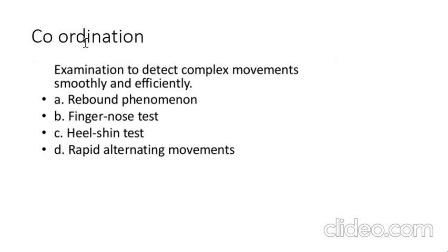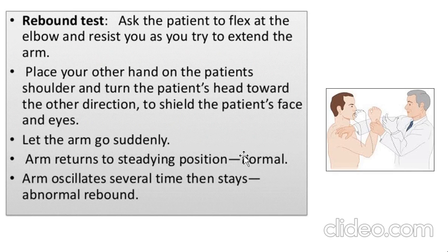Coming to coordination — we assess higher functions like the cerebellum, basal ganglia, and brainstem. To detect whether complex movements are done smoothly or not, we perform: rebound phenomenon, finger-nose test, heel-shin test, and rapid alternating movement.